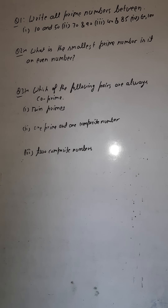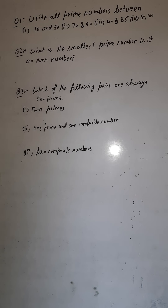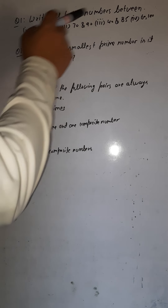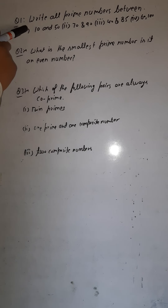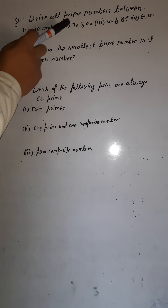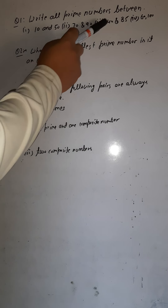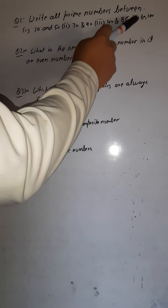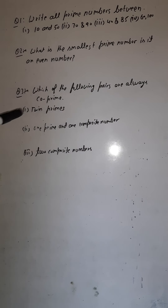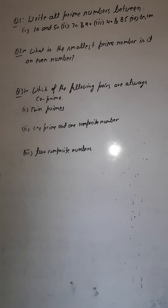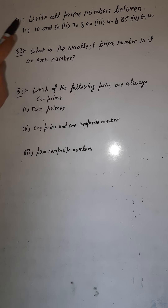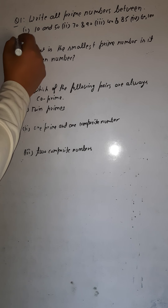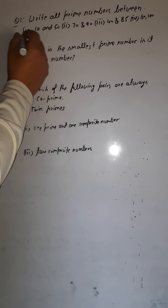Now I have some questions for you. The first one is: write all prime numbers between (1) 10 and 50, (2) 70 and 90, (3) 40 and 85, and (4) 60 and 100. You have to write all the prime numbers between the given numbers. I'll solve the first one; the rest you have to do on your own.